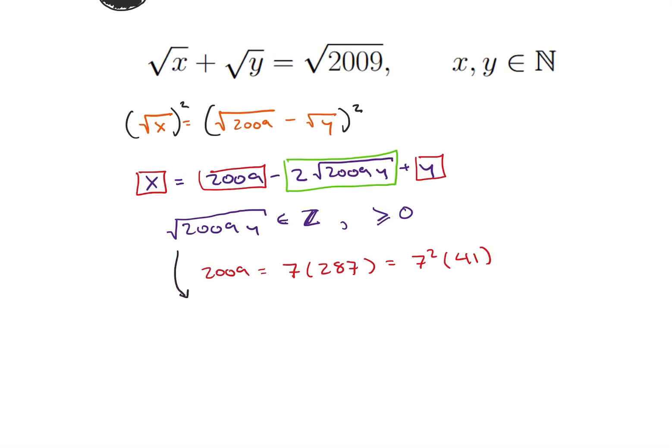So if we look at this, this is actually the square root of 7 squared times 41 times y, which is equal to 7 square root of 41y. So we know that guy must be an element of the integers.